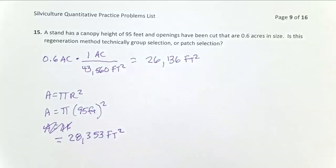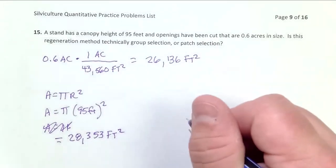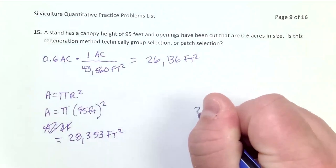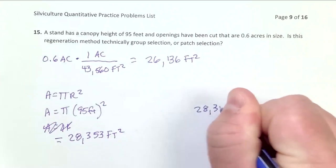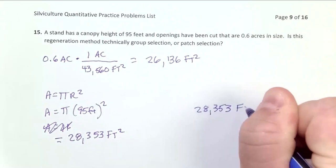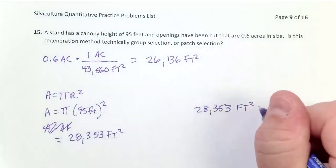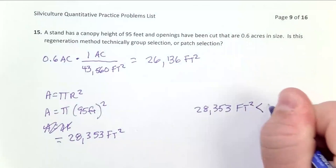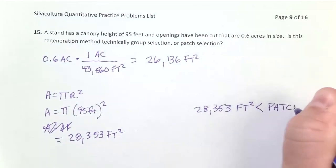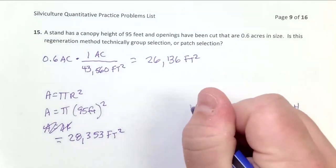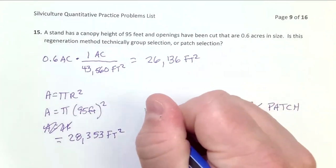Okay. So now I have to interpret this. That's my breakpoint. So I'm going to write it over here again: 28,353 feet squared. So what I know is if I have an opening that is bigger than this, we'll call it patch selection. If I have an opening that is smaller than this, we'll call it group selection.